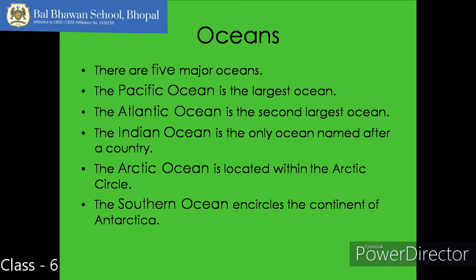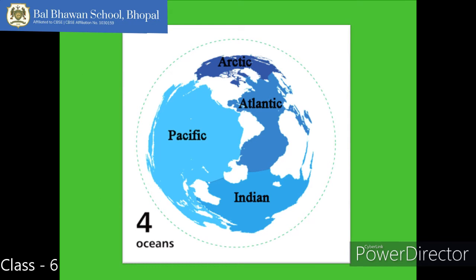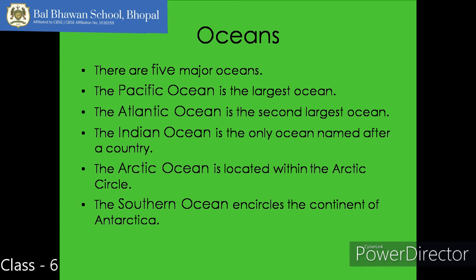There are five major oceans. The Pacific Ocean is the largest ocean and is almost circular in shape. The Atlantic Ocean is the second largest ocean, which is S-shaped. The Indian Ocean is the only ocean to be named after a country, and it is almost triangular in shape. The Southern Ocean encircles Antarctica and extends northwards up to 60 degrees south latitude. The Arctic Ocean is the ocean within the Arctic Circle and surrounds the North Pole.